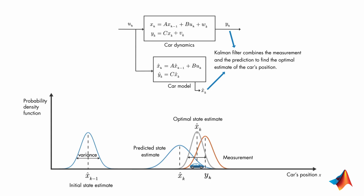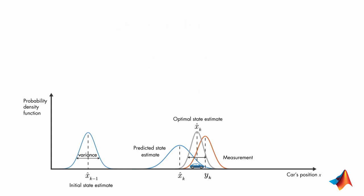Computationally, the multiplication of these two probability density functions relates to the discrete Kalman filter equation shown here. Does this ring a bell? Doesn't it look similar to the state observer equation that we discussed in previous videos? Actually, a Kalman filter is a type of state observer, but it is designed for stochastic systems. Here is how the Kalman filter equation relates to what we've discussed with the probability density functions.